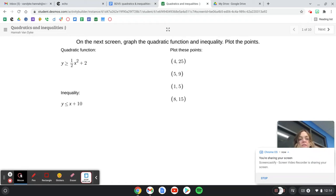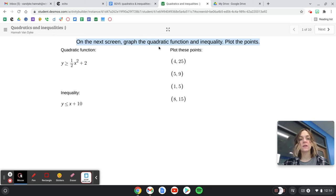To get started with this activity, we're going to read the instructions. This says: on the next screen, graph the quadratic function and inequality, plot the points. So I see I have a quadratic function here and then I have a linear inequality here.